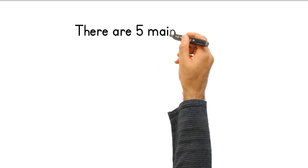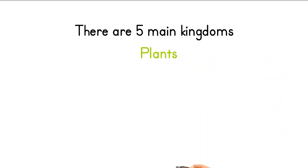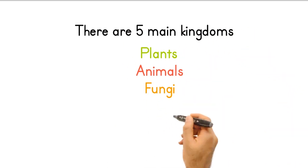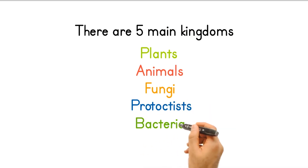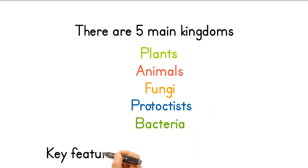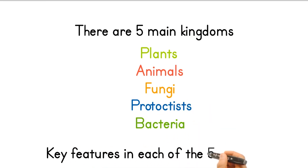There are five main kingdoms: plants, animals, fungi, protoctists, and bacteria. Let's look at some key features in each of the five kingdoms.